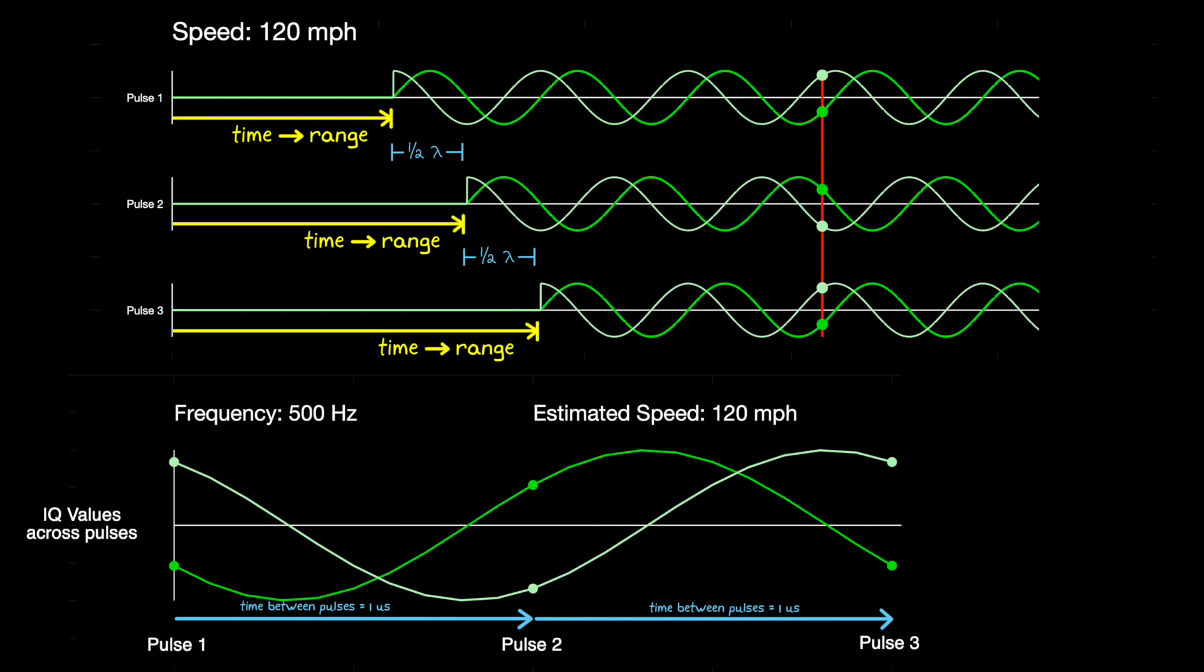In this example, the frequency of the pulse is 2.8 GHz, so it has half a wavelength of about 5.5 cm. So this means that an object can't travel more than 5.5 cm between pulses, or in one millisecond.